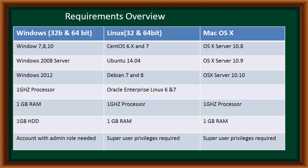For Linux, if you are running a 32 or 64-bit system, you can use CentOS 6.x and 7, Ubuntu 14.04, Debian 7 and 8, or Oracle Enterprise Linux 6 and 7. A minimum of one gigahertz processor speed is required, along with one gigabyte of RAM. You need to have super user privileges on an account before you can perform the installation.